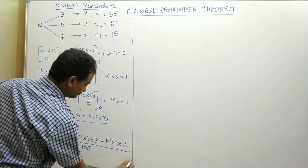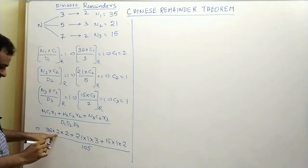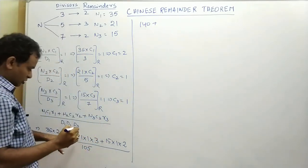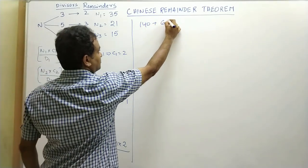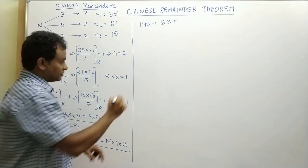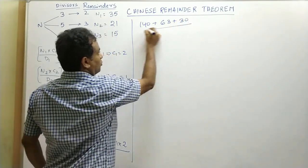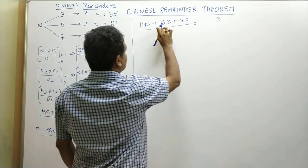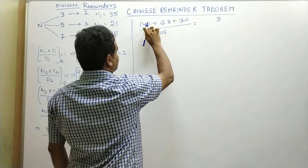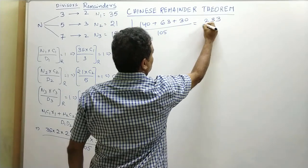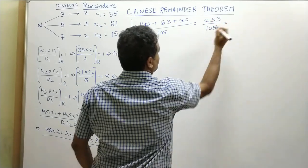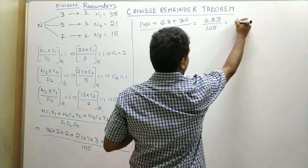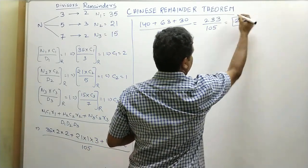Computing: 35 × 2 = 70, 70 × 2 = 140; 21 × 1 × 3 = 63; 15 × 1 × 2 = 30. So we get 140 + 63 + 30 = 233, divided by 105. Since 105 goes 2 times into 233, we subtract 210, giving a remainder of 23.